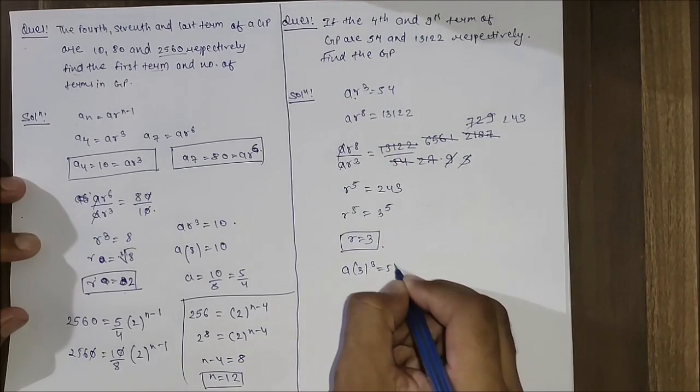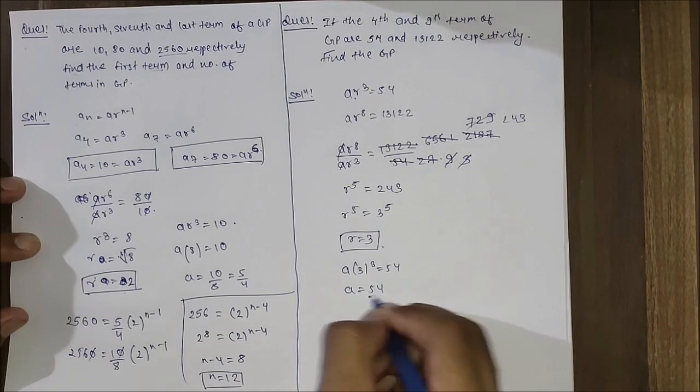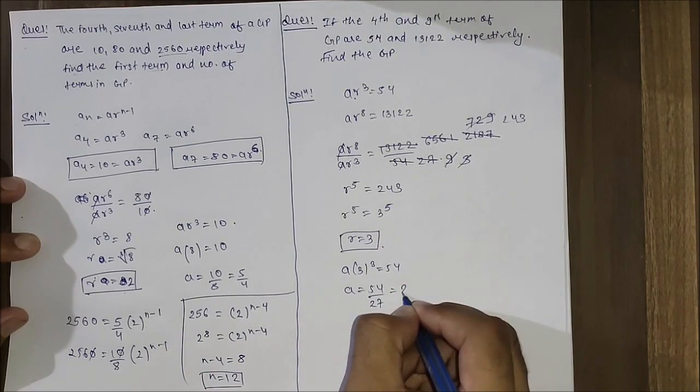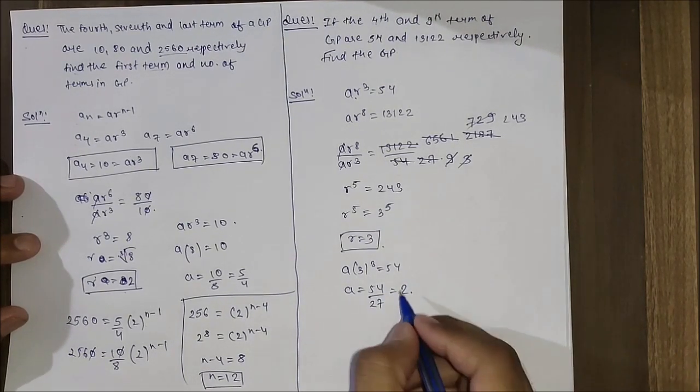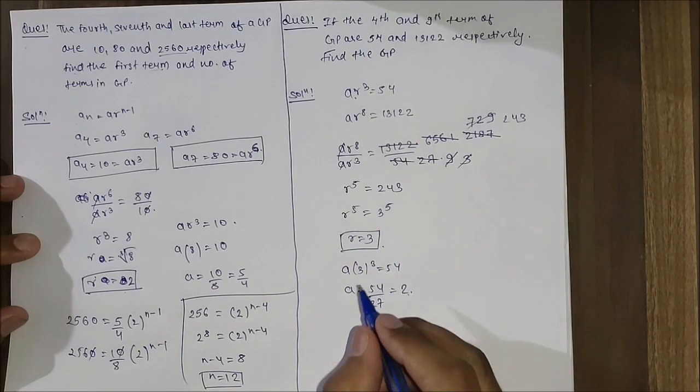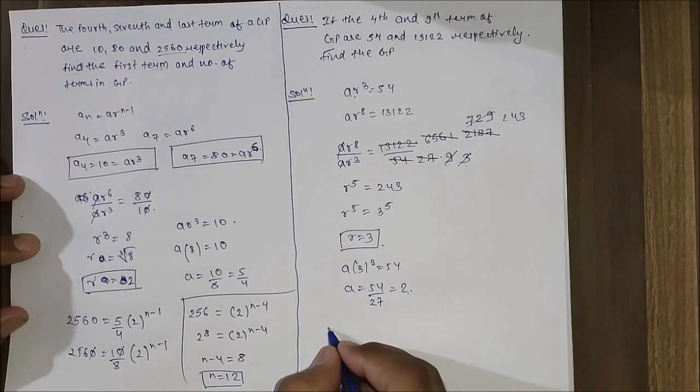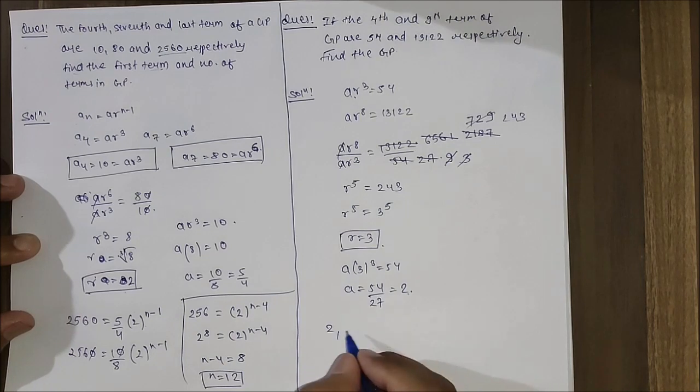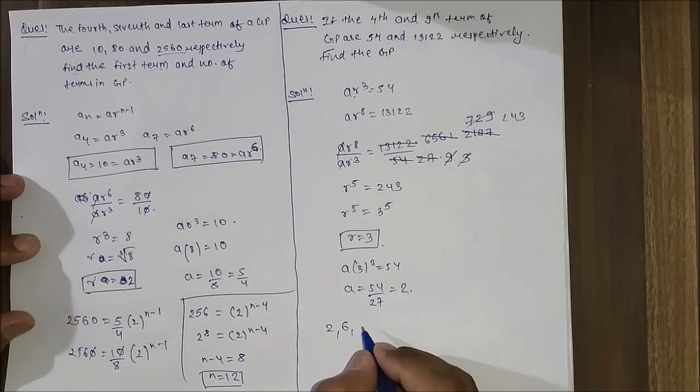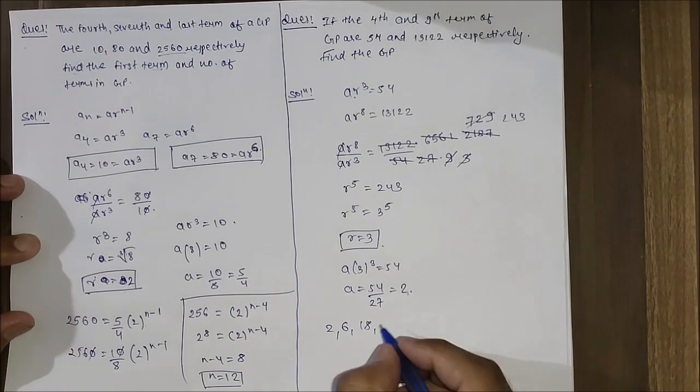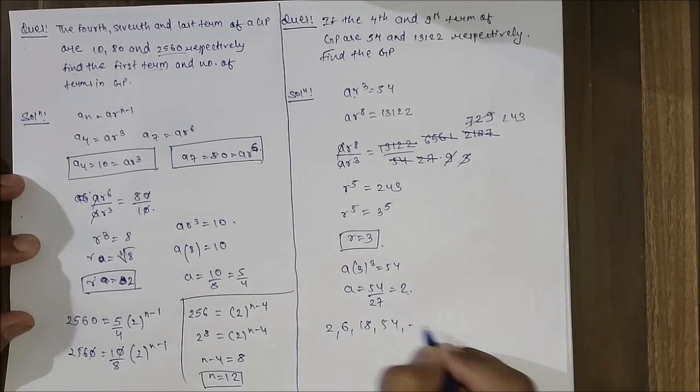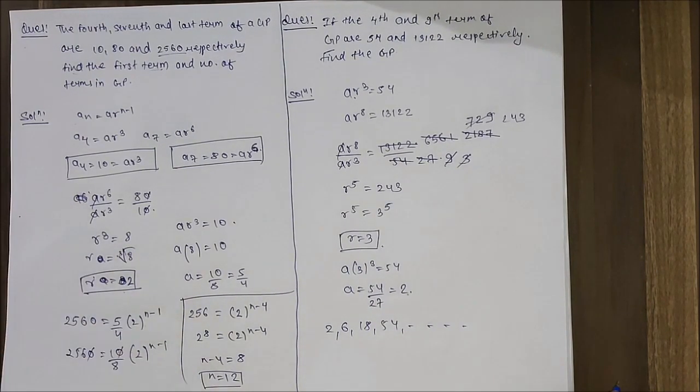We found r. Let's put it in the equation: a times 3³ equals 54, so a equals 54 by 27, which gives a equals 2. Now we know the first term is 2 and the common ratio is 3. So we can write the GP as: 2, then 2 times 3 equals 6, then 6 times 3 equals 18, then 18 times 3 equals 54, and so on. This question is also solved. Thank you very much.